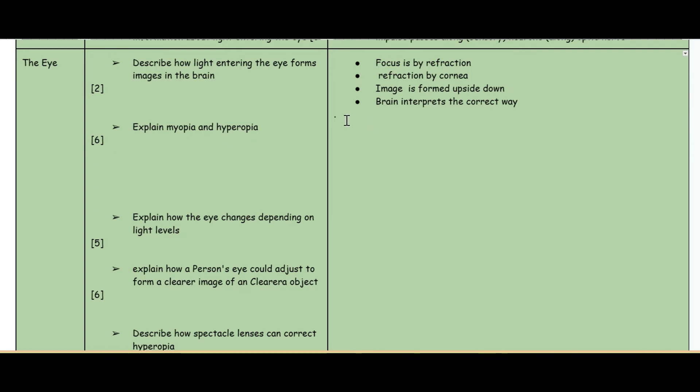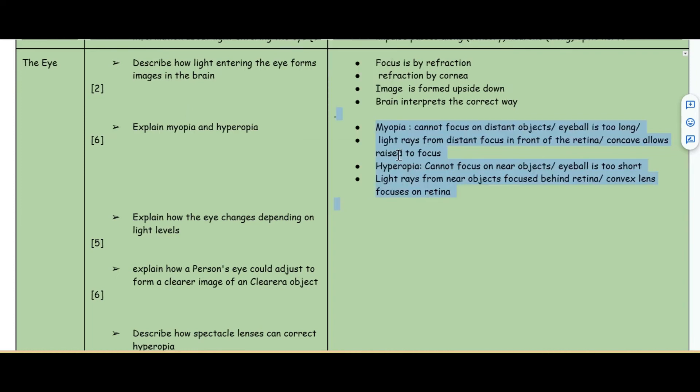The second question: explain myopia and hyperopia. Myopia is when you are unable to focus on distant objects. This means that your eyeball is too long, so light rays from a distant object focus in front of the retina. Hyperopia is when you are unable to see near objects. Your eyeball is too short, so the light rays from near objects focus behind the retina. Concave lenses can fix myopia and convex lenses can fix hyperopia.